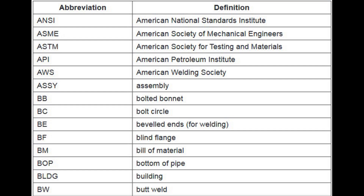BB stands for Bolted Bonnet. BC stands for Bolt Circle. BE stands for Beveled Ends for Welding. BF stands for Blind Flange. BM stands for Bill of Material. BOP stands for Bottom of Pipe. BLDG stands for Building. BW stands for Butt Weld.